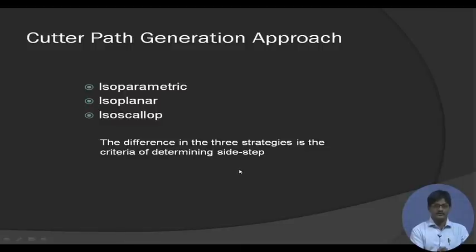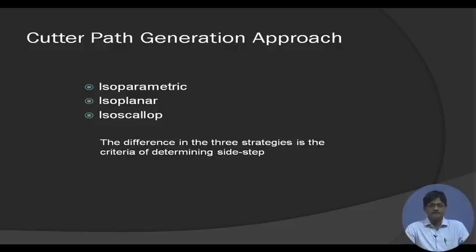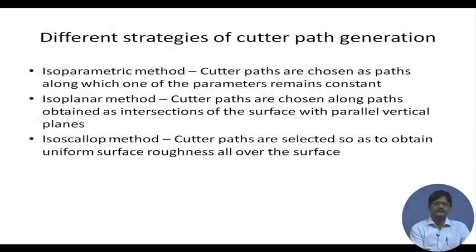There are three methods of cutter path generation, depending on how we define the sidestep and forward step. These are called isoparametric, isoplanar, and iso-scallop methods.